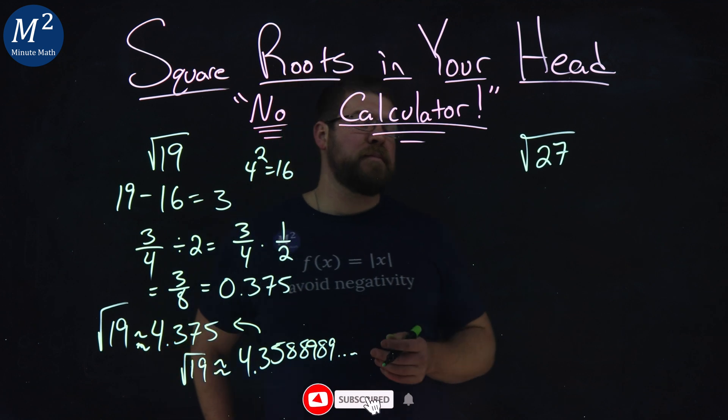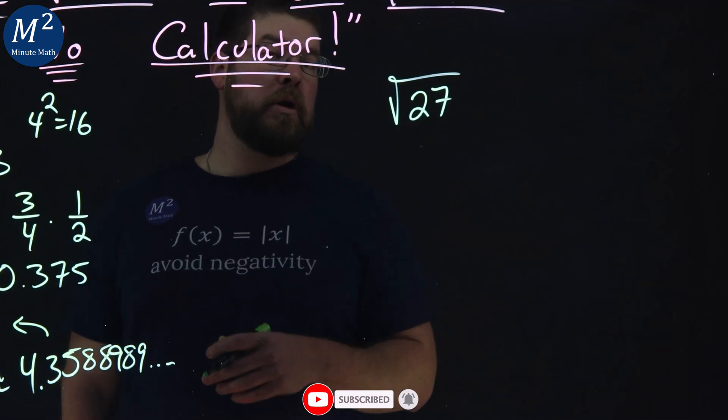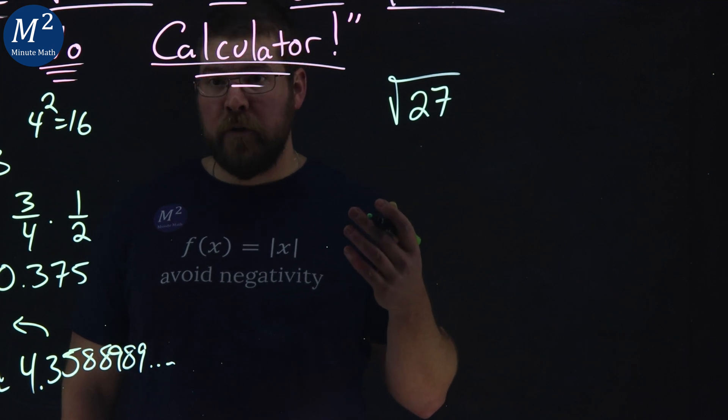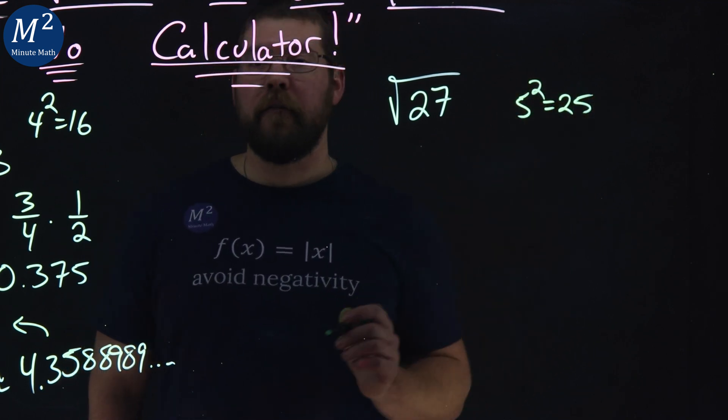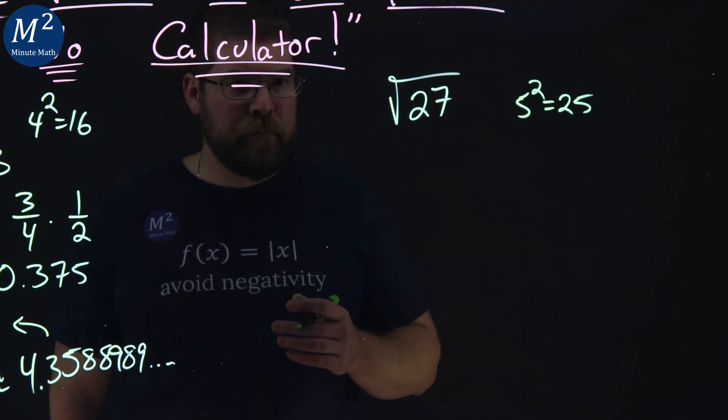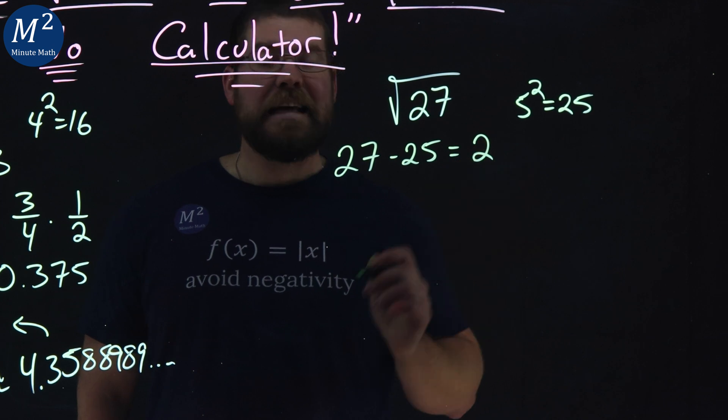Now let's try another one, square root of 27, same process. Perfect square below that is going to be 25. 5 squared is equal to 25, we want the first one below it. So I take 27 and minus 25 to it, and I get 2.